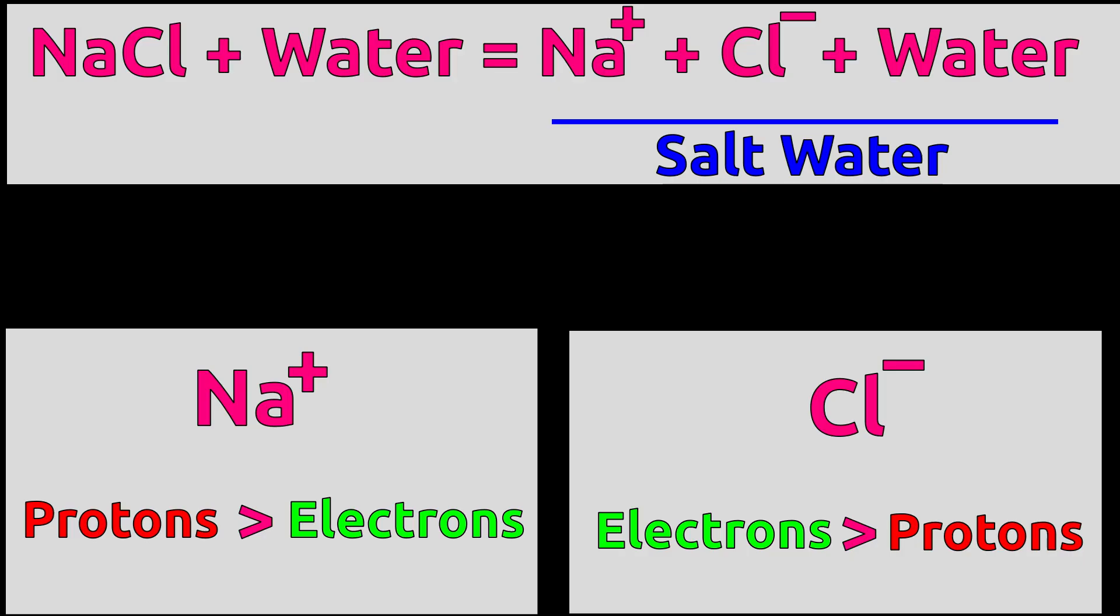Sodium ion is positively charged because it has fewer electrons compared to protons, whereas chlorine ion is negatively charged because it has more electrons compared to protons.